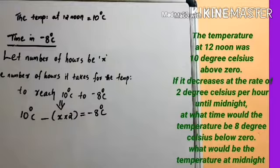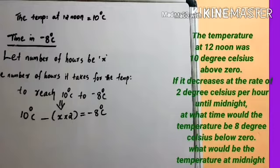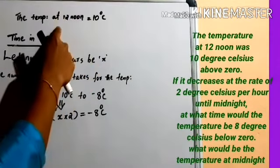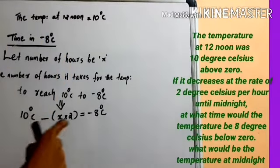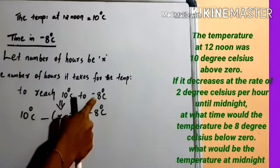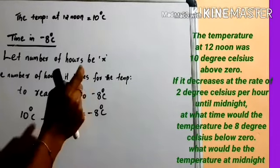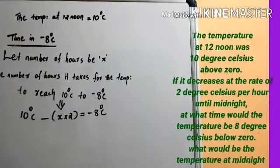Temperature at 12 noon was 10 degree Celsius above 0, which means it is positive 10. Then 8 degree Celsius below 0 means negative 8 degree Celsius. Here, the number of hours to reach negative 8 degree Celsius equals the time at which the temperature is negative 8 degree Celsius. Temperature at 12 noon: 10 degree Celsius.